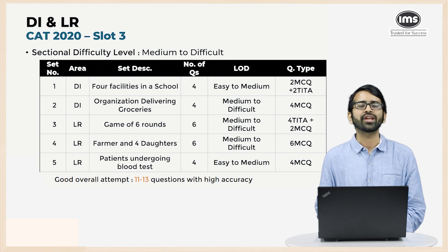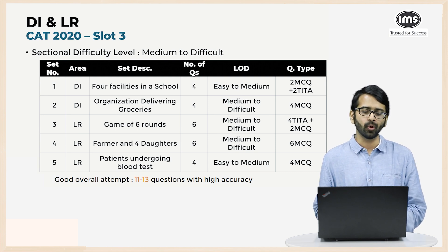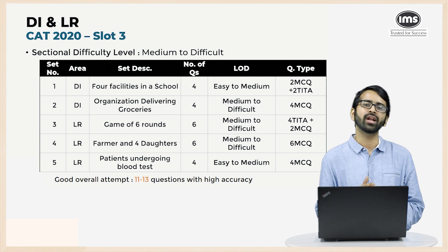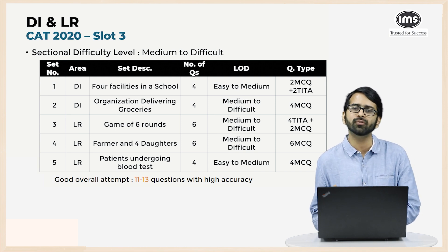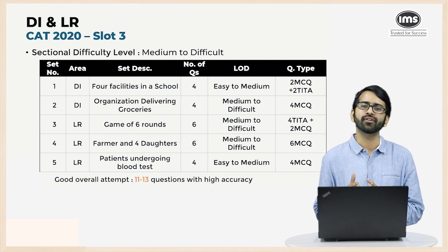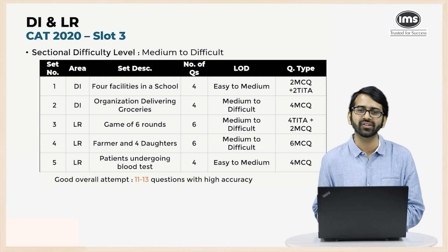If you're aiming for a 99-plus percentile in DILR, a good overall attempt should be somewhere around 11 to 13 questions with very high accuracy.